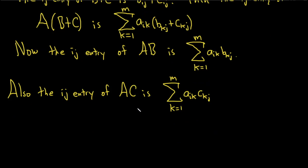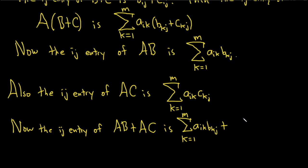And we're looking at the sum. We want to add these up. So now, the ij entry of AB plus AC is the following. We simply add these. So this will be the sum, as k runs from 1 to m, of aik bkj, plus the sum, as k runs from 1 to m, of aik ckj. Okay, we're just taking AB and adding it to AC. The ij entry of AB plus the ij entry of AC is the ij entry of AB plus AC.